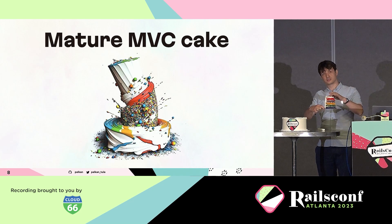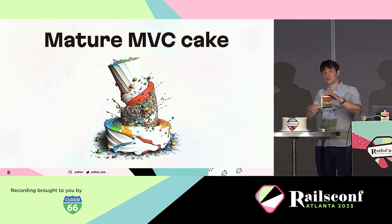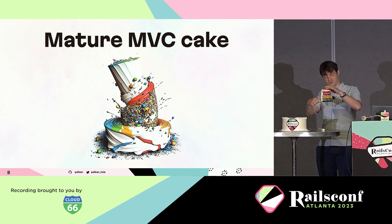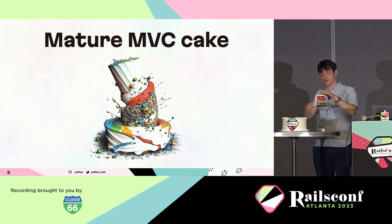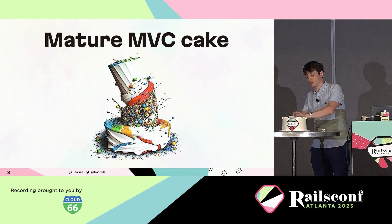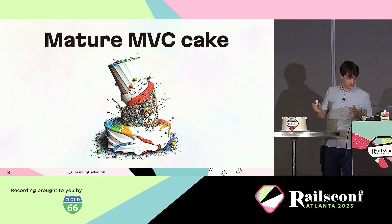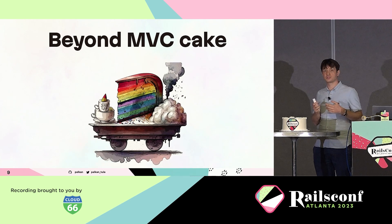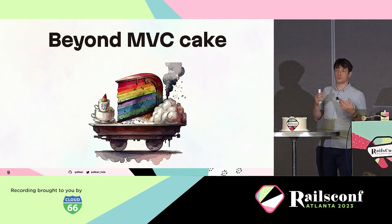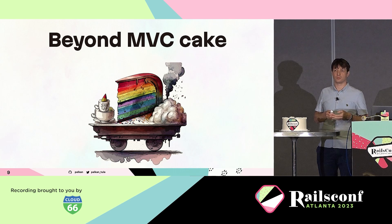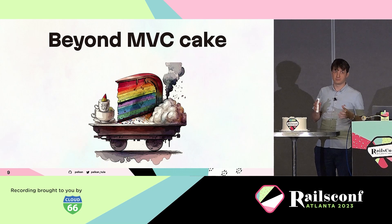The solution is simple: instead of increasing the size of the layers, we introduce new layers. We cook our large cake using multiple layers, cook them independently, then glue them together. We scale the number of layers instead of scaling the layers themselves. In software development, that's going to be abstraction layers — and that's what we're going to talk about today: how to go from MVC to a more sophisticated but efficient architecture.